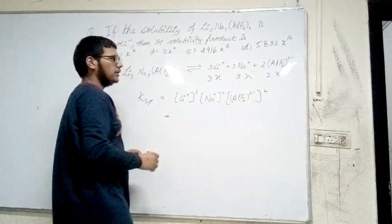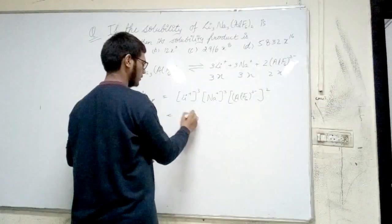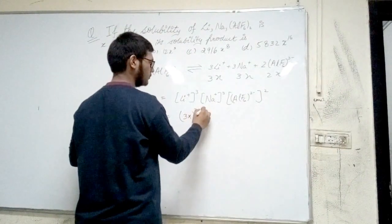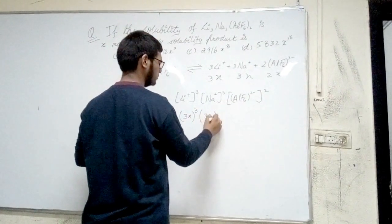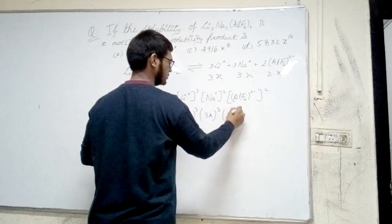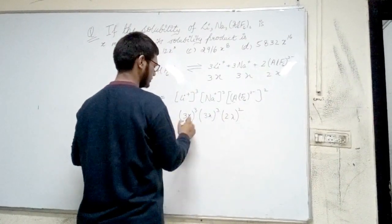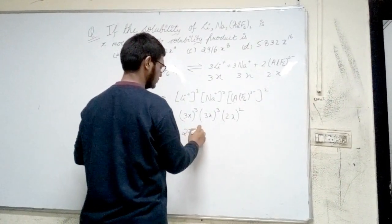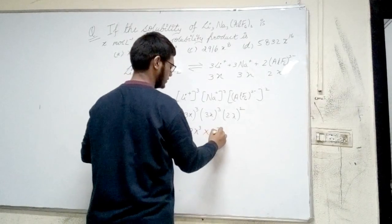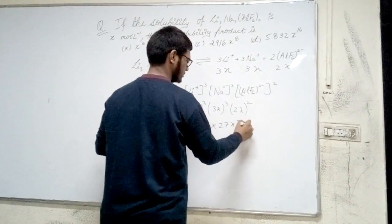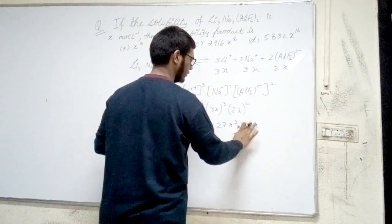So substituting the values here, we get 3^3 x^3 times 3^3 x^3 times 2^2 x^2. This becomes 27x^3 times 27x^3 times 4x^2.